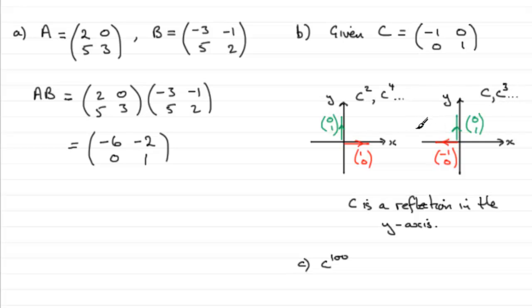So can you see that C to the 100, being an even power, is now going to be on this side. It's going to take us back to our original state.